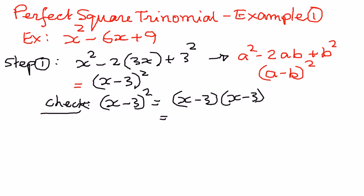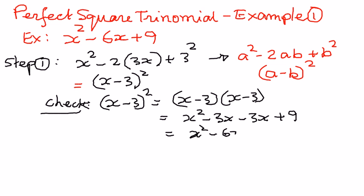x times x is x to the power of 2. x times negative 3 is negative 3x. Negative 3 times x is negative 3x. And negative 3 times negative 3 is positive 9. So this is going to be x squared minus 6x plus 9. So x minus 3 raised to the power of 2 equals x squared minus 6x plus 9 — exactly what we have.